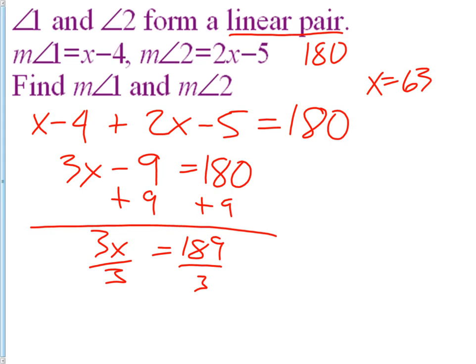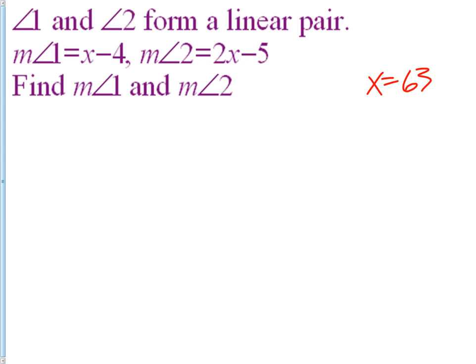We now have the value of x. Our last step, once we know the value of x, is to take that value and substitute it back in. Our first equation says x minus 4. So for angle one, we're going to do 63 minus 4, which is 59. There's the measurement of angle one.